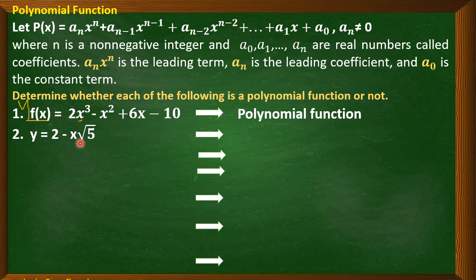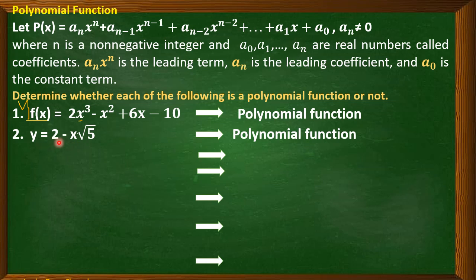Number two is also a polynomial function: y = 2 - x^(√5). However, if the given is y = 5√x, where the variable x is inside the radical sign, then that is not a polynomial function. But for number two, it is a polynomial function.